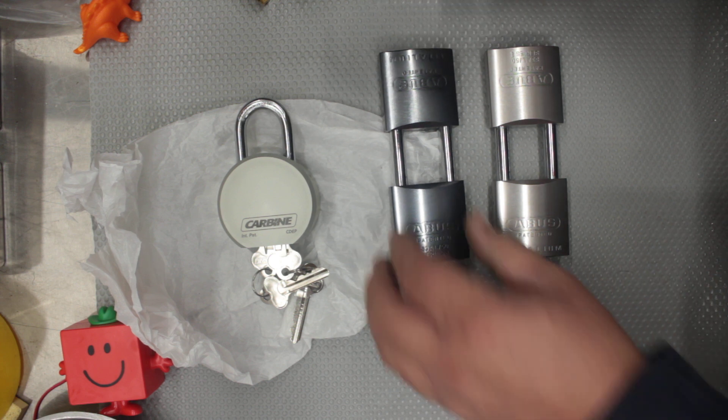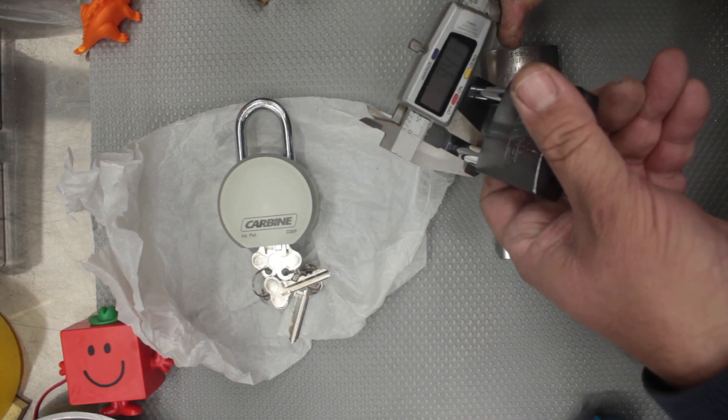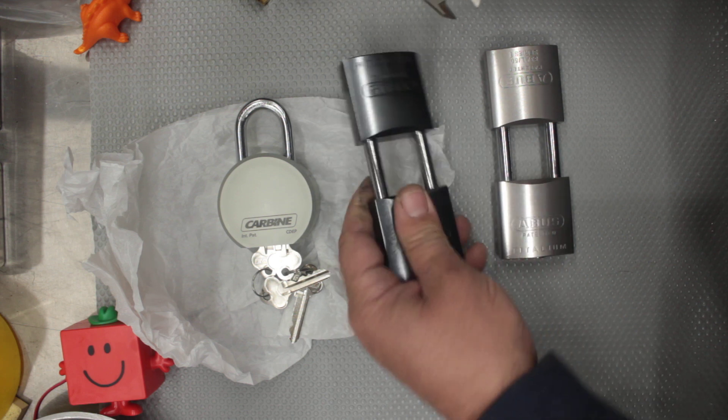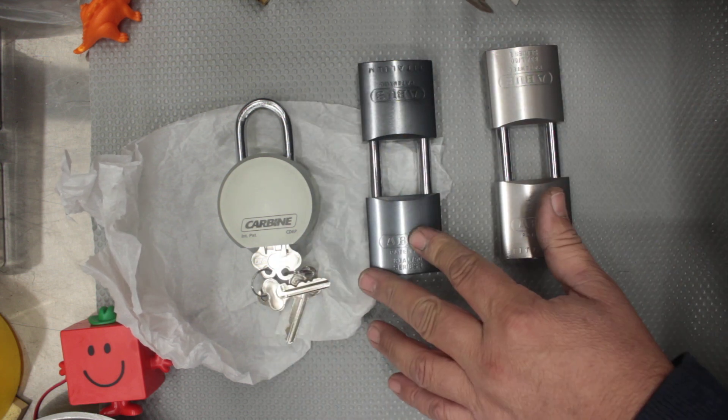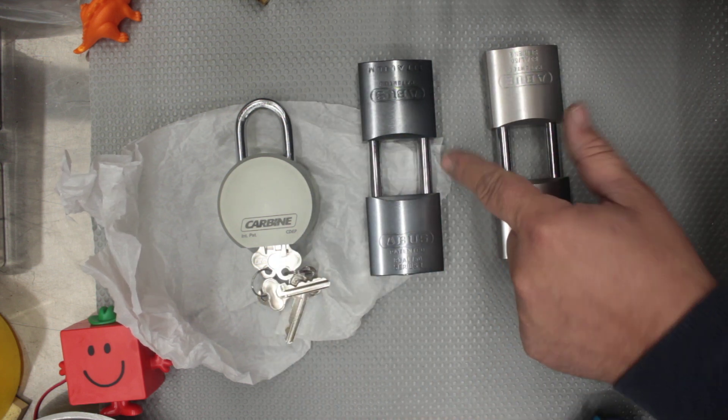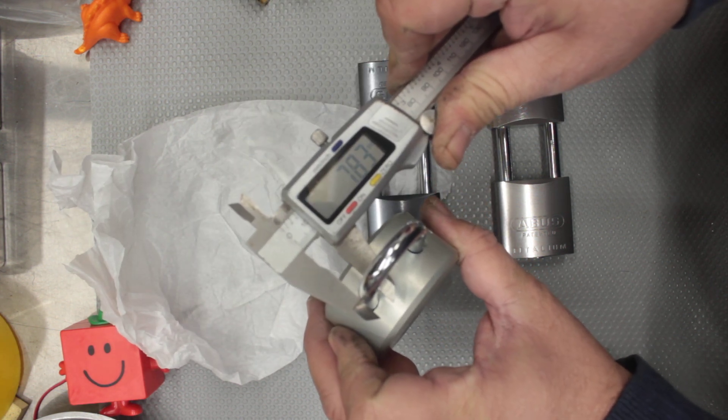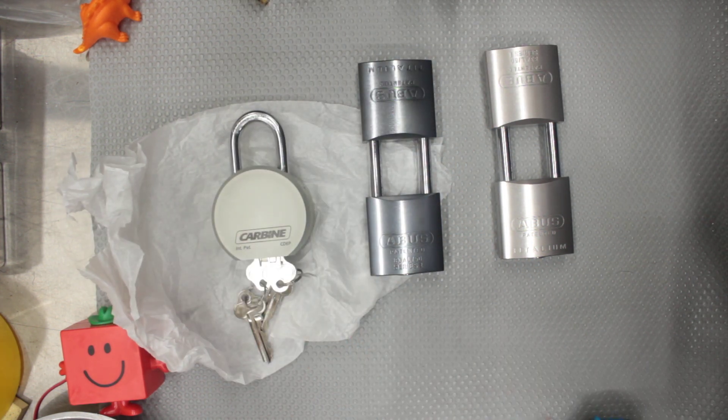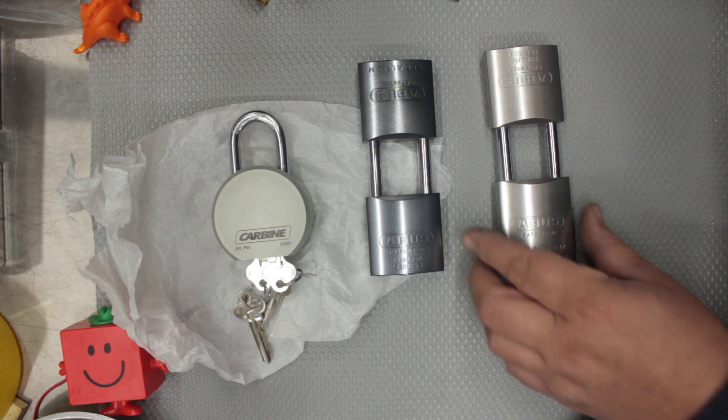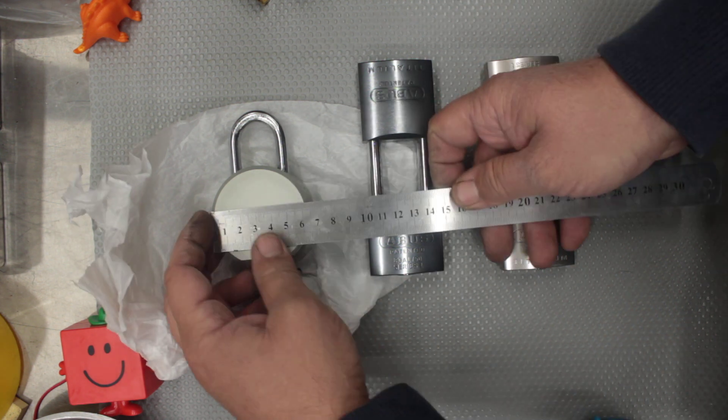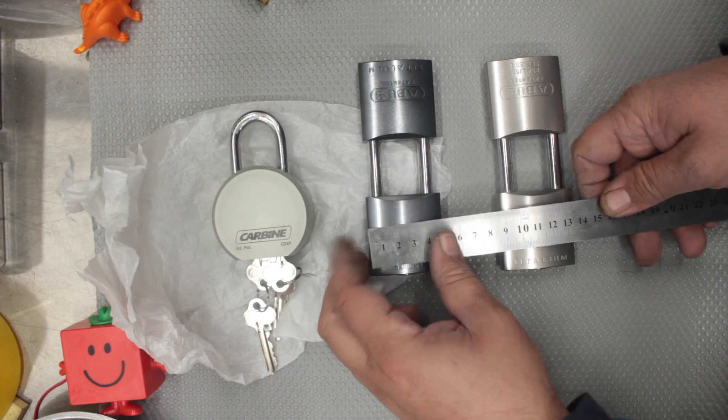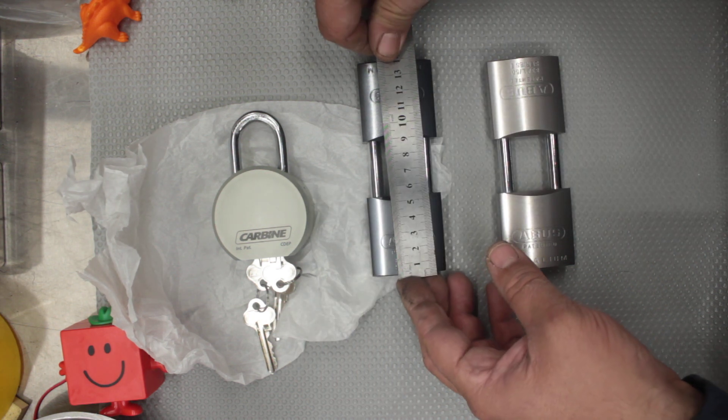The Abus right here, we've got a shackle diameter of 9.41 and this is a 50 mil padlock because that was the only one I could get the parts for to make it up. This shackle here is 7.83 which is closer to 8 mil which is more common. Body size on this one here we're talking about 65, this one here we're talking about 50 by about 50.